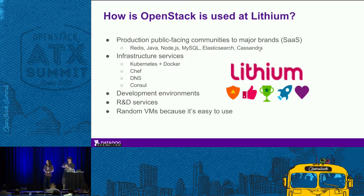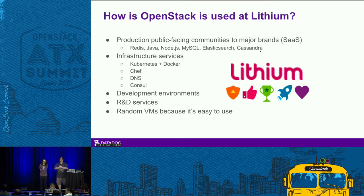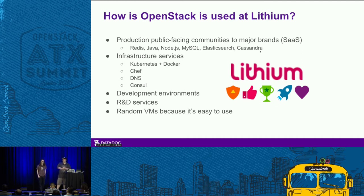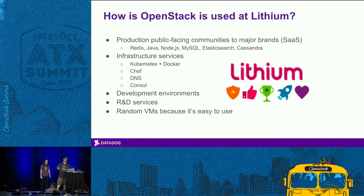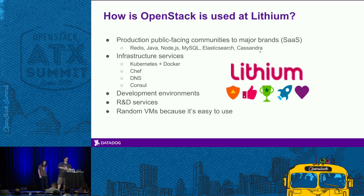We use OpenStack in a variety of ways at Lithium. We have a bunch of production-facing communities — we're a SaaS, so a lot of communities for Fortune 500 and enterprise companies. The services running on OpenStack include Redis, Java, MySQL, Node, Elasticsearch, Cassandra, and a whole bunch of other things. We also run Kubernetes with Docker, Chef, DNS, Consul, and all our development environments. It's a cloud, so random stuff gets to run on there, which makes monitoring a bit of a challenge.